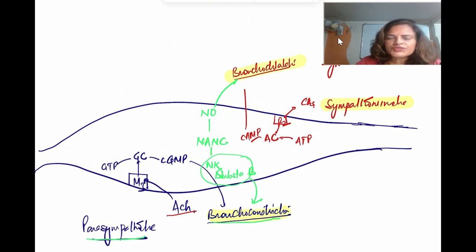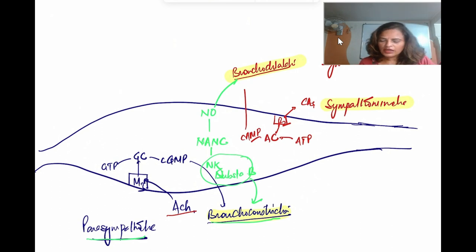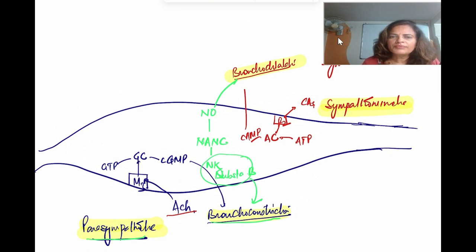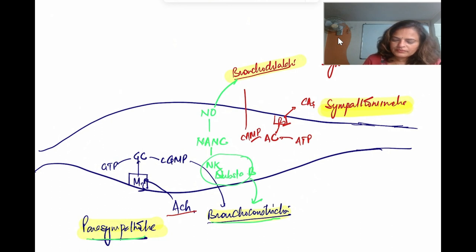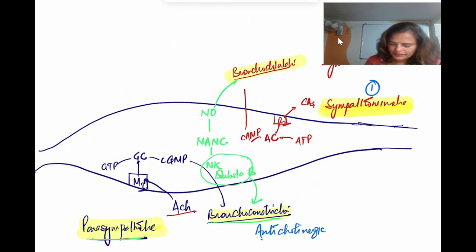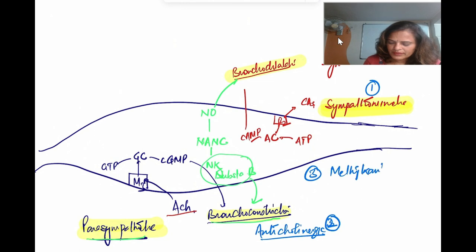Since we want bronchodilation in bronchial asthma, sympathomimetic drugs will cause bronchodilation, and parasympatholytic or anticholinergic drugs will also cause bronchodilation by blocking the parasympathetic tone. Under bronchodilator drugs, there are three groups: number one is sympathomimetics (adrenergic drugs), number two is anticholinergic drugs, and number three is methylxanthines. Another mediator that causes bronchoconstriction is adenosine.